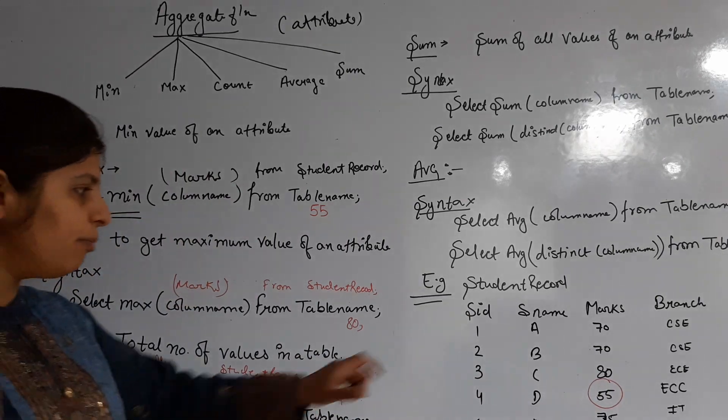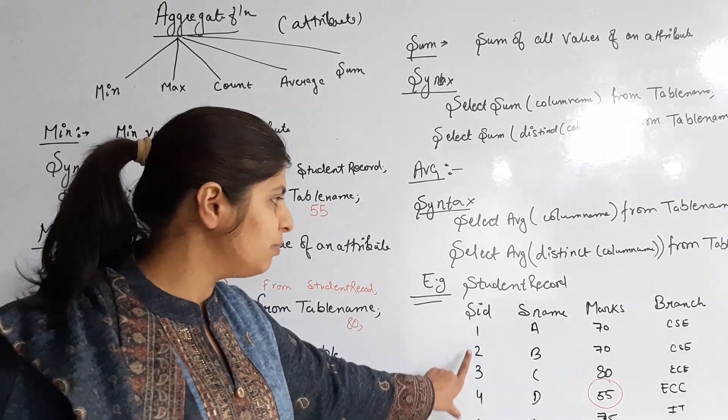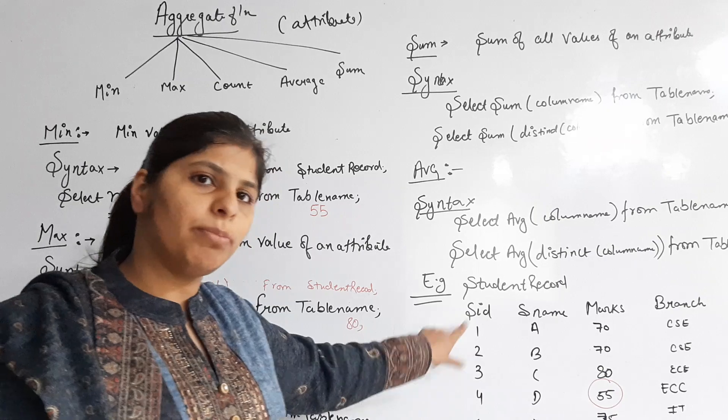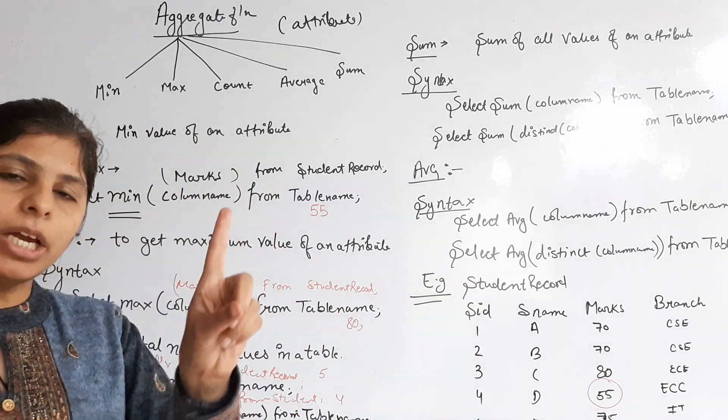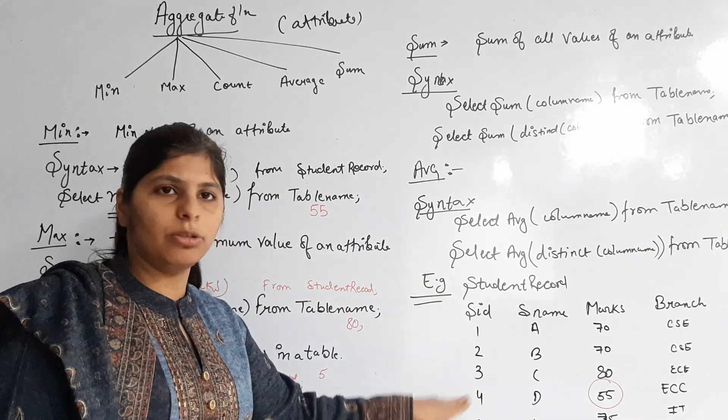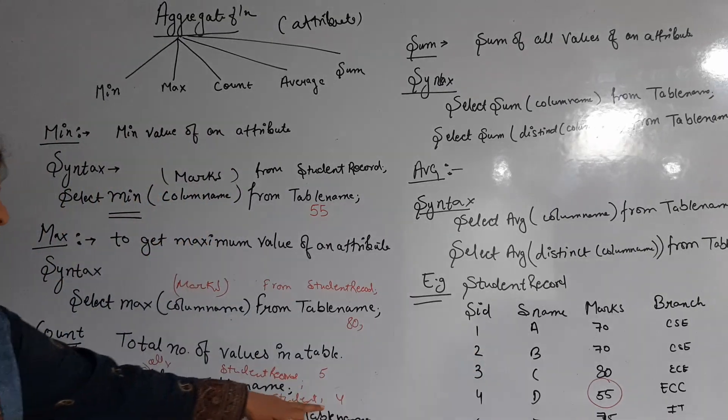Because I have five records, and the first and second roll number marks are repeated, they will be counted only one time so there are no duplicates. So the number of records that come is four.